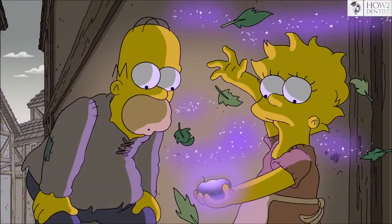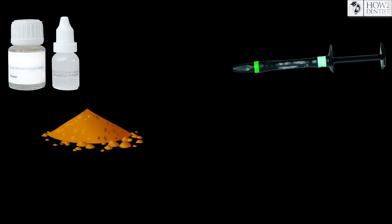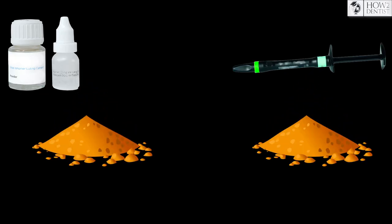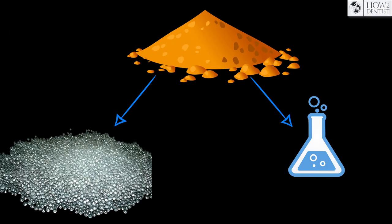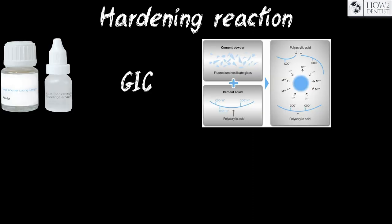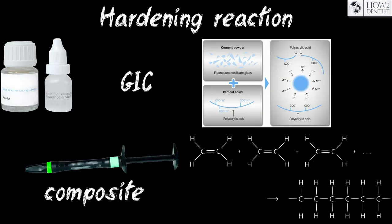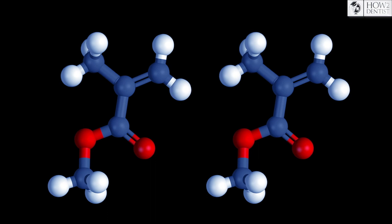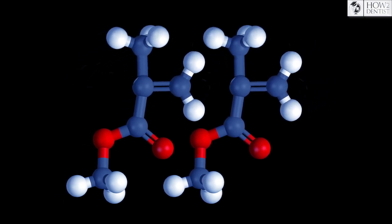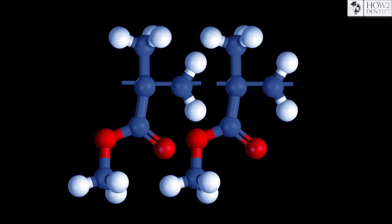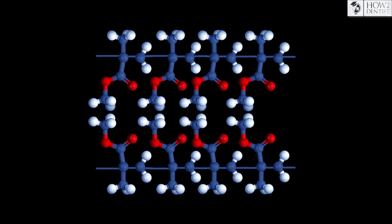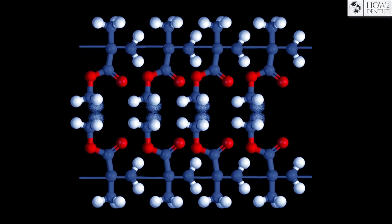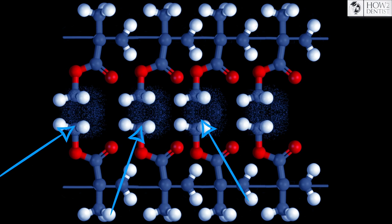How was such a miracle cement created? The filler of GIC and composite are essentially the same — aluminum silicate glass — and the acids are from the same class: polyalkenates. However, the hardening reaction in GIC is acid-base, and in composite it is polymerization. In composites, roughly speaking, many similar acids must combine into one large molecule — that is, polymerize — and then cross-link with an inorganic filler such as aluminum silicate glass.